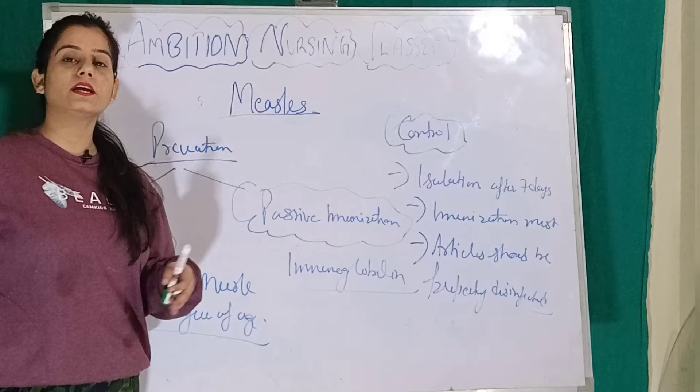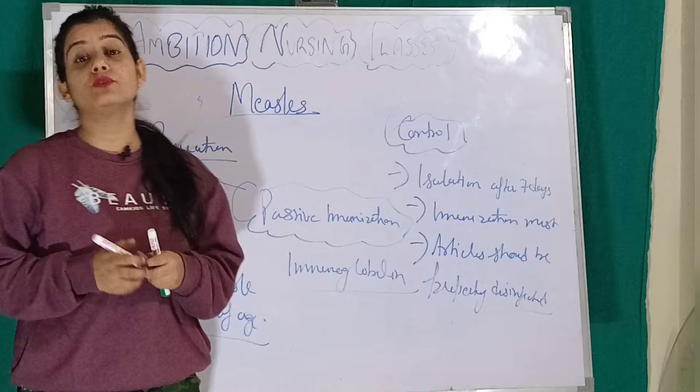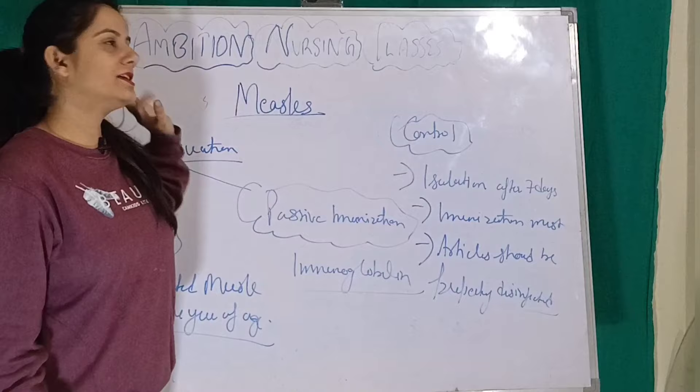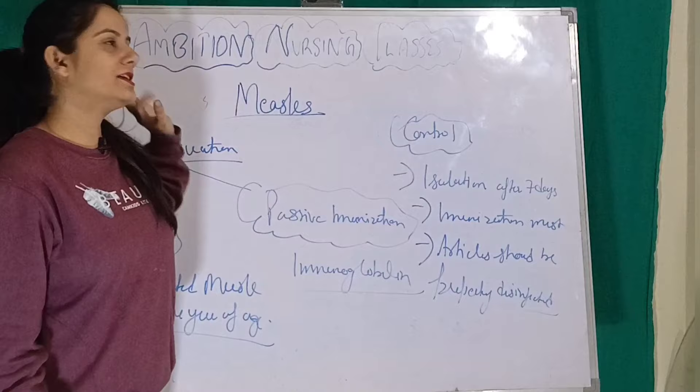So these were the respiratory communicable diseases, in which we studied tuberculosis, chickenpox, measles, and influenza — all falling under the respiratory system. Now we jump to the next communicable disease, that is the arthropod-borne disease.